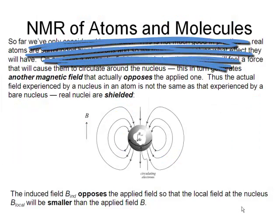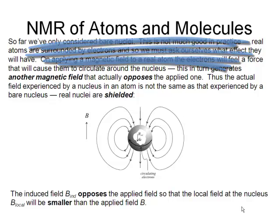When we have atoms and molecules, we don't just have nuclei, but of course we have electrons to worry about.